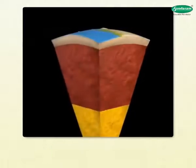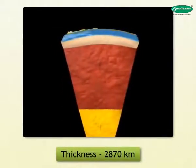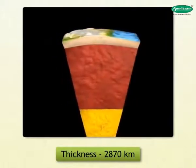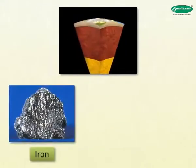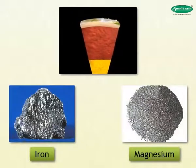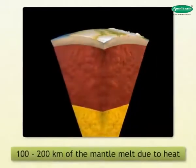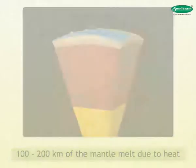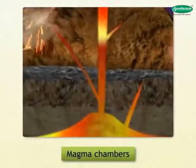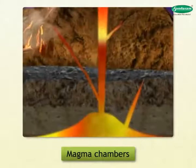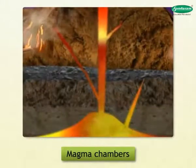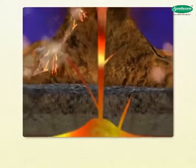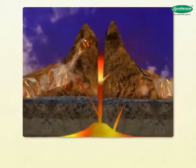The mantle is the layer below the crust. Its thickness is about 2,870 kilometers. It consists of compounds of iron and magnesium. Rocks in the upper 100 to 200 kilometers of the mantle melt due to heat, and magma chambers are found in this part. When magma reaches the Earth's surface through volcanic activity, it is called lava.